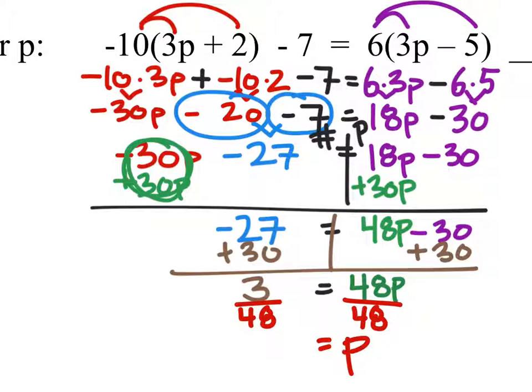What this does is it gives me a single value p and it would be 3 divided by 48 which I can simplify since both of these are divisible by 3. So I would divide the 3 by 3 which is 1 and 48 divided by 3 is 16.